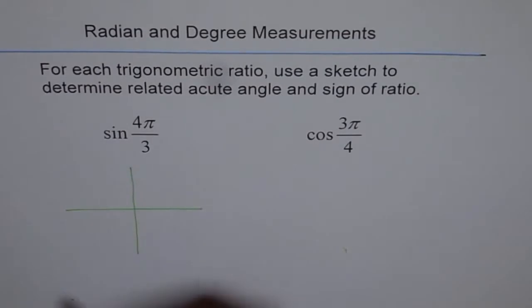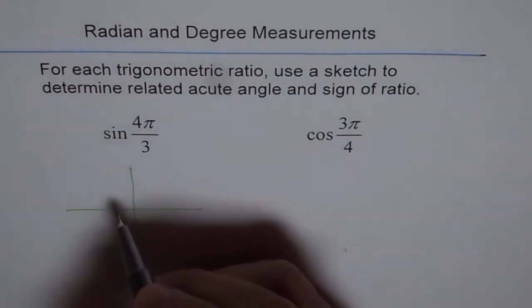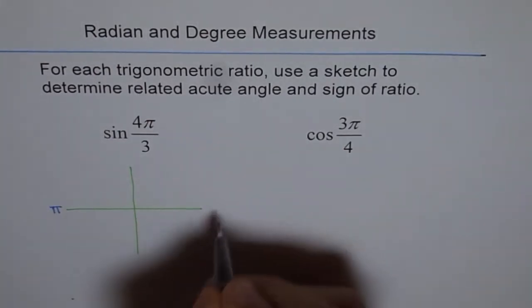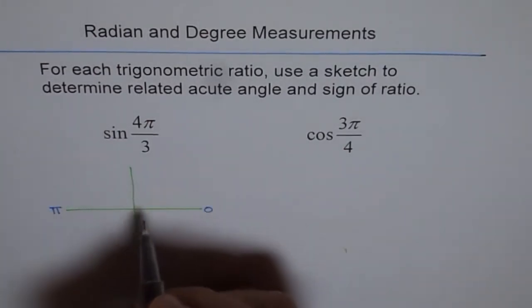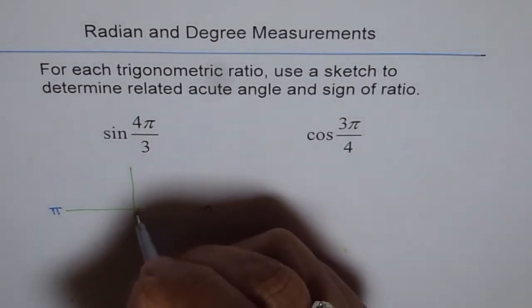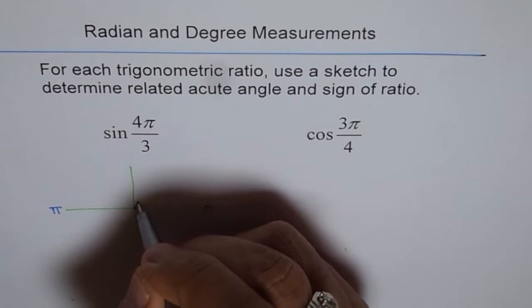So let's try to sketch the angle 4π by 3. How do you sketch 4π by 3? What you need to do is divide your π in 3 equal parts. So this is your π, 0 to π. This one is π and here it is 0. And you go counter-clockwise for positive angle. 4π by 3 means dividing this into 3 equal parts.